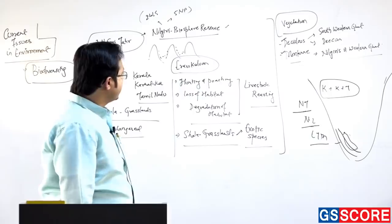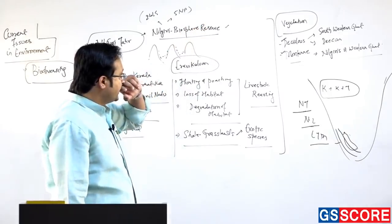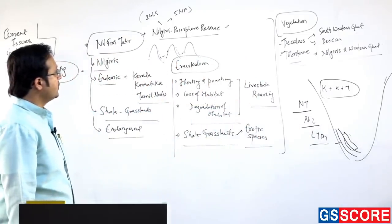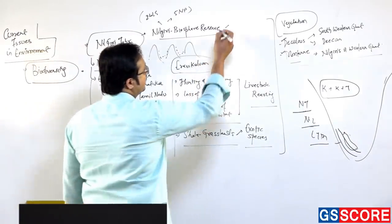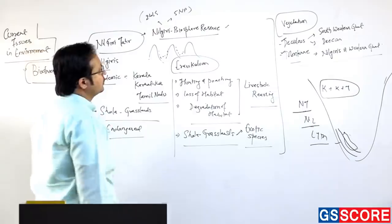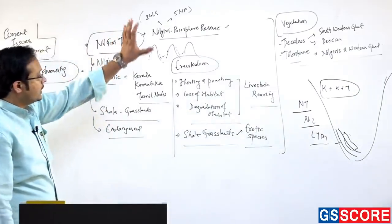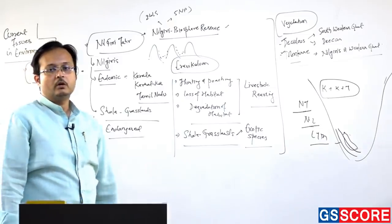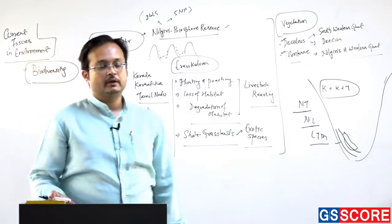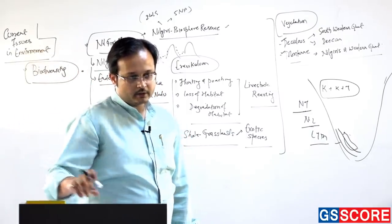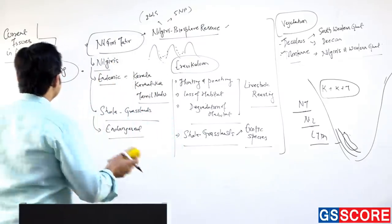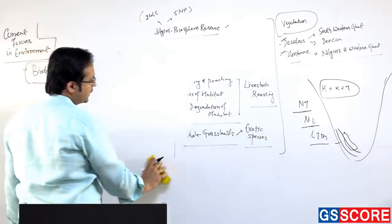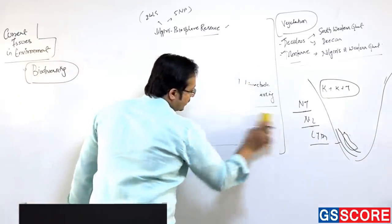Questions related to this issue can cover: the species itself, the Lion-tailed Macaque and Nilgiri Langur, the extent of the Nilgiri Biosphere Reserve, and its geography. The present status of Nilgiri Tahr remains endangered, and problems associated with shola grasslands — specifically exotic species invasion — are also important.